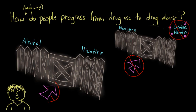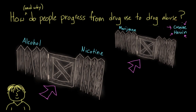And there is some support for this idea. First, the order of drug use that I've described here is pretty typical. People who use substances generally do use alcohol and cigarettes before they use marijuana. And it's also true that individuals who use heavier substances did in fact use alcohol, cigarettes, and marijuana first.